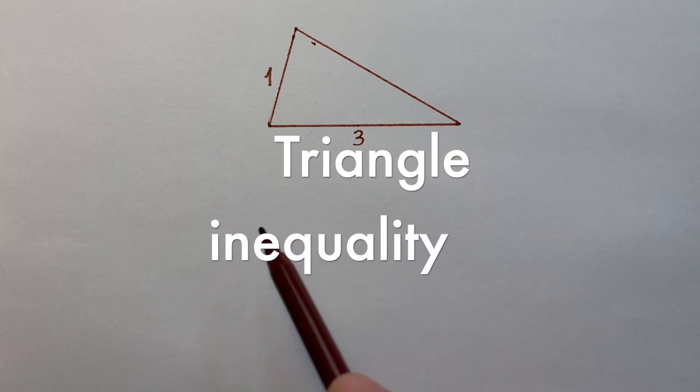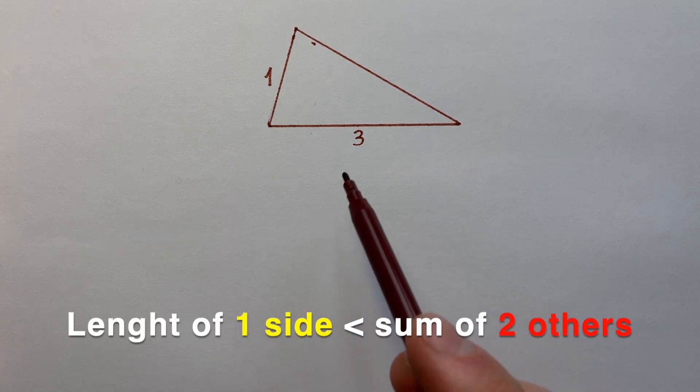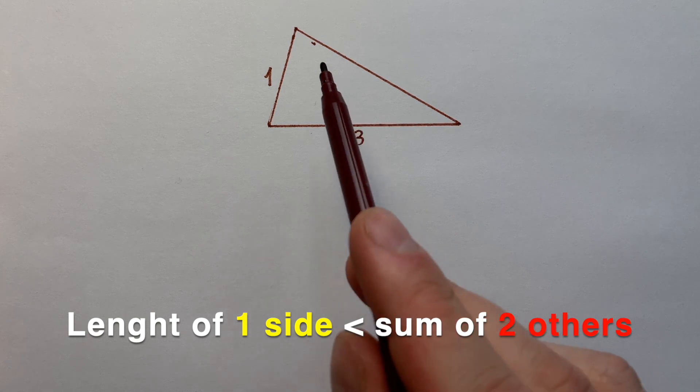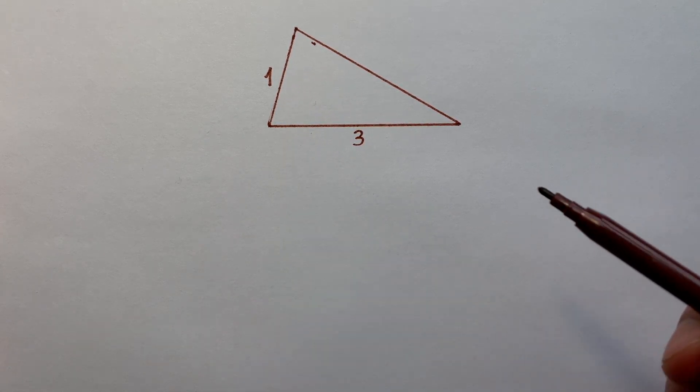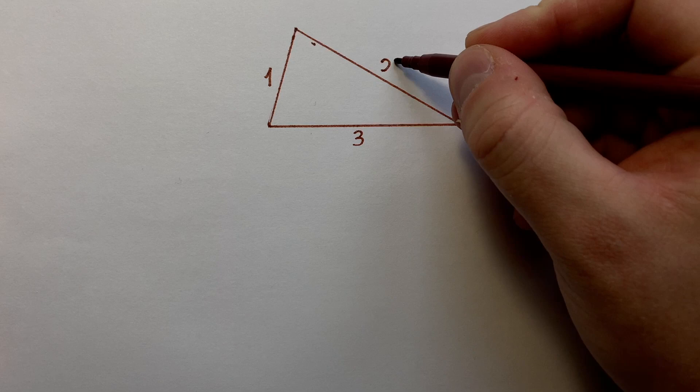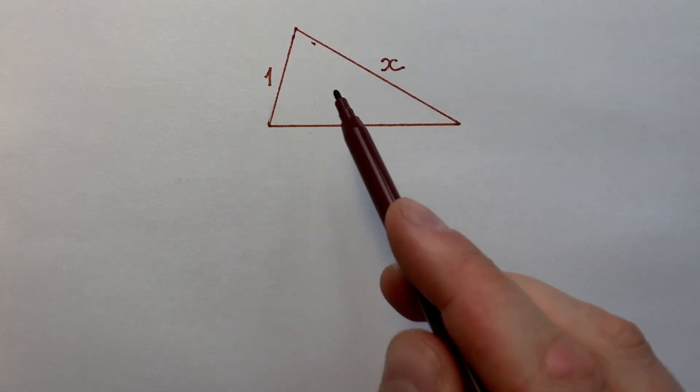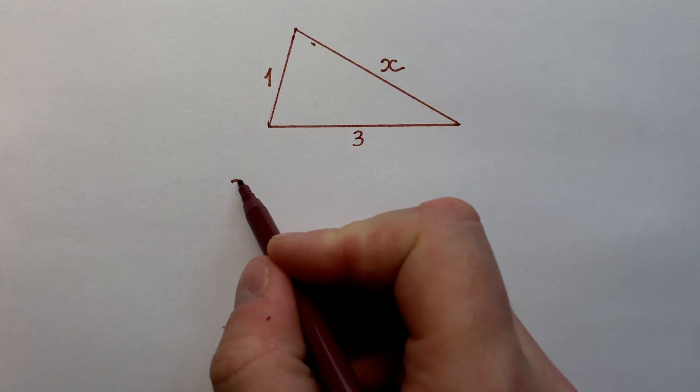It says that length of one triangle side is less than sum of length of two other sides. Let's name the unknown side as x and write this inequality for each side of our triangle.